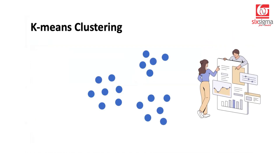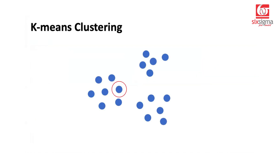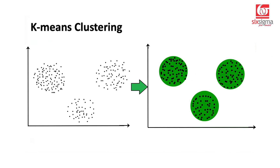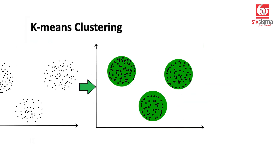Let's say we have some data. These are the observations represented by the blue dots on the screen. Now, we are interested in doing clustering here, which means we want to group these points which are closer to each other and different from the other groups.